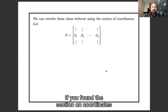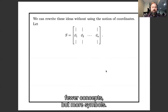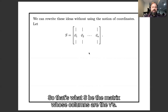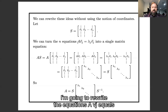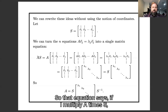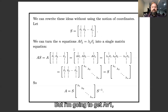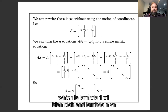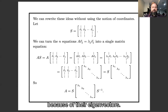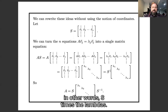If you found the section on coordinates sort of confusing and difficult, here's a way to rewrite it with fewer concepts but more symbols. Let S be the matrix whose columns are the v's, and I'm going to rewrite the equations A*vj = λj*vj as a single matrix equation. That equation says if I multiply A times S, so S is the matrix whose columns are the v's, then I'm going to get A*v1, A*v2, ..., A*vn, which is λ1*v1, ..., λn*vn, because they're eigenvectors. We can rewrite that as the matrix whose columns are the v's times on the right by the diagonal matrix of lambdas — or in other words S times Λ.